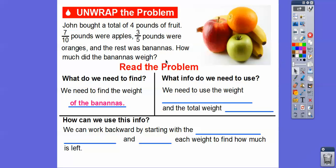So what information will we use? We need to use the weight of the apples and the weight of the oranges, and the total weight of all the fruit. And then how are we going to use this? Well, in this lesson, we're going to work backwards by starting with the weight of the apples and the oranges, and then subtract those from the weight to find out how much is left.